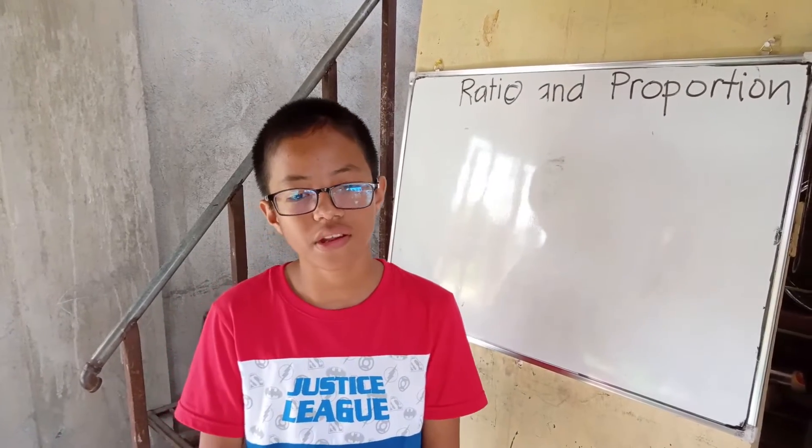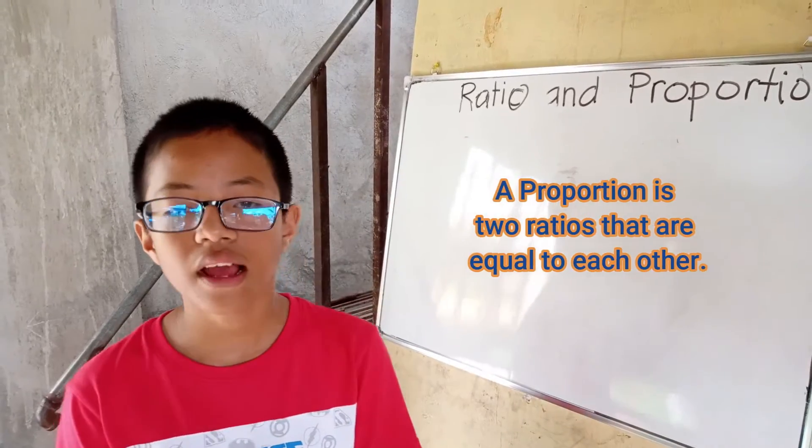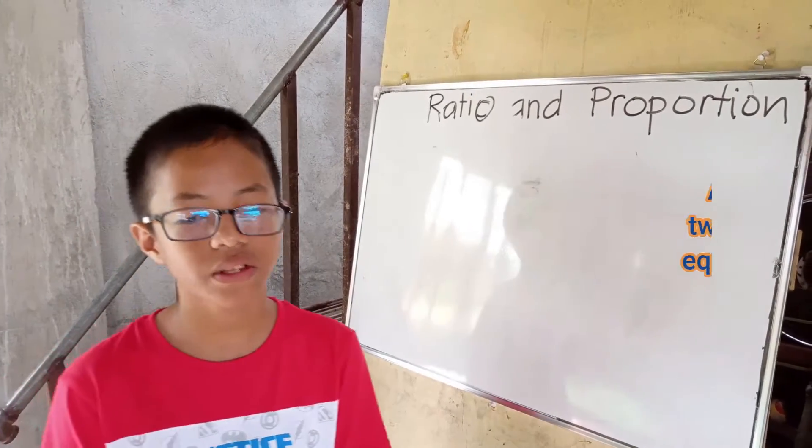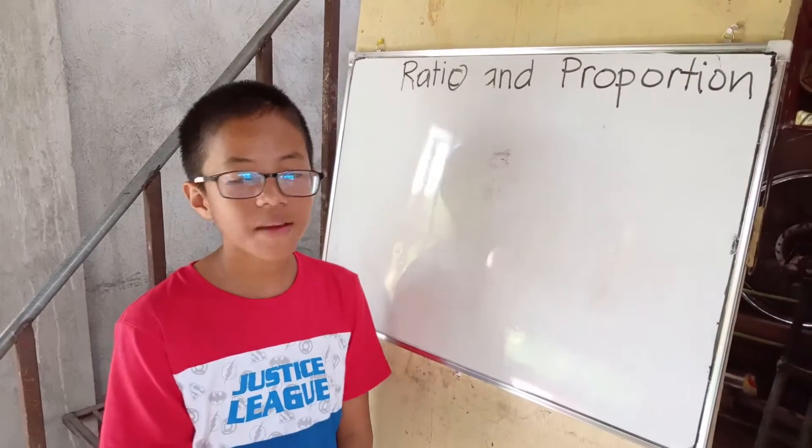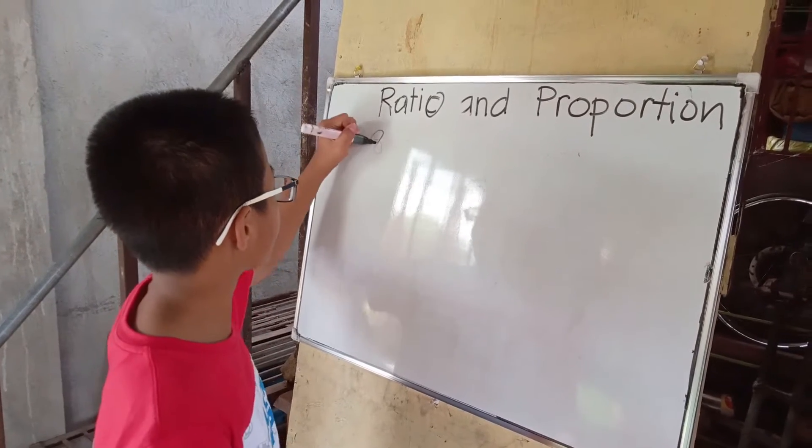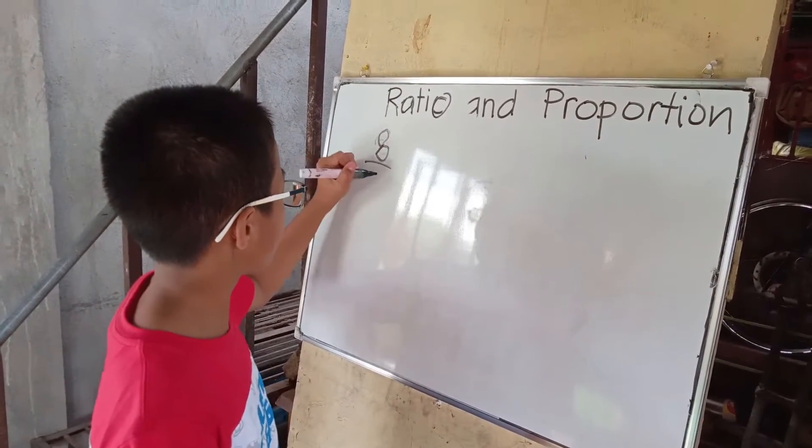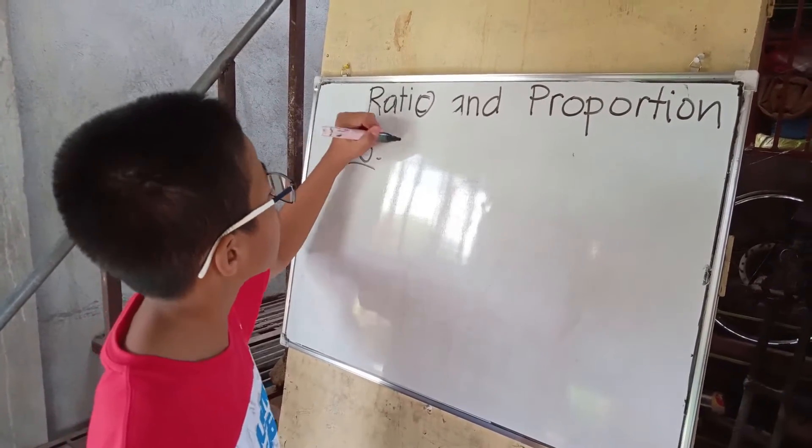What is proportion? A proportion are two ratios that are equal to each other. For example, 8 is to 6 lemons.